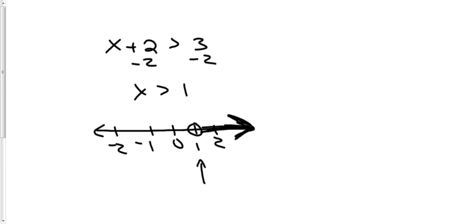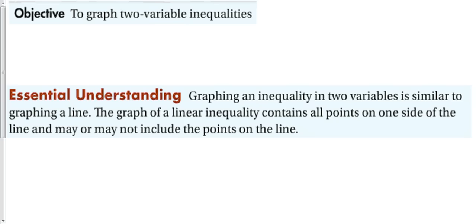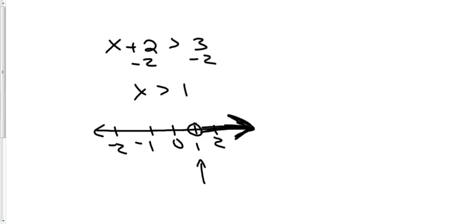Now, remembering that 1 is called the boundary point, and we shade everything to the right of the boundary point. In this section, we're going to throw another variable in — graphing two variable inequalities, something with an x and something with a y. The graph of a linear inequality contains all the points on one side of the line and may or may not include the points on the line, just like this equation may or may not include the boundary point of 1.